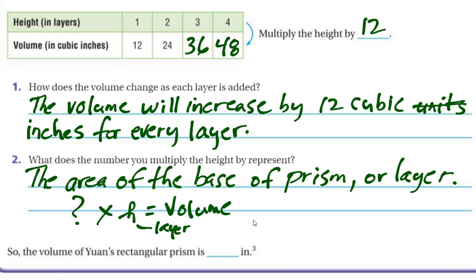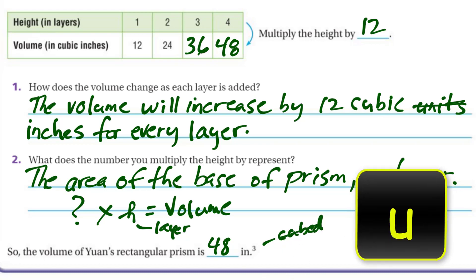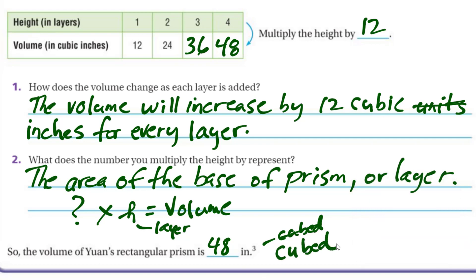The volume of Yuan's rectangular prism is — we already determined it was 48. And the key word there is cubed — 48 cubic inches.